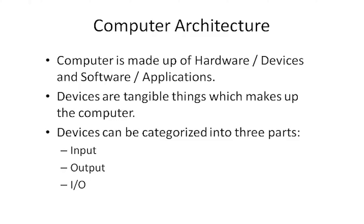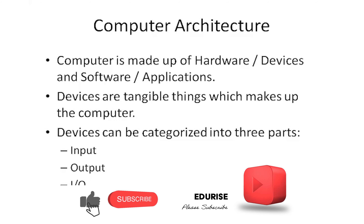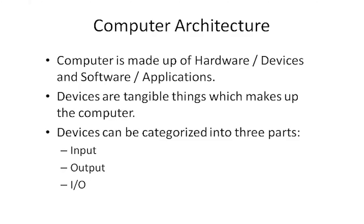Some people call hardware 'devices' and software 'applications' — both are interchangeable terms. Hardware are tangible things which make up the computer, for example keyboard, mouse, projector, screen, printer, etc. You can categorize devices into three parts: input devices, output devices, and input/output devices.